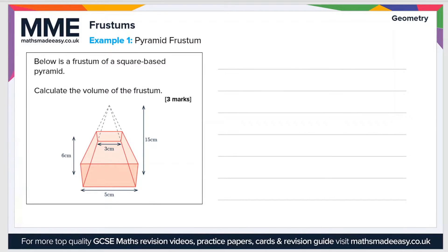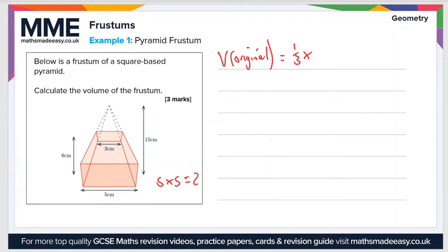Let's take a look at an example question. This time it's a pyramid frustum. Below is a frustum of a square base pyramid — calculate the volume of the frustum. Again, we need to work out the difference between the volume of the original pyramid and the one that's been removed. The volume of a pyramid is one-third times the area of the base. Since this is a square base pyramid, the area of the base is five times five, which is 25.